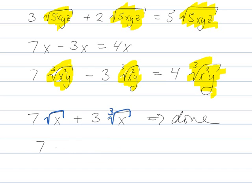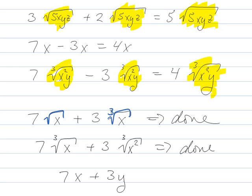Similarly, if you had cube root of x plus cube root of x squared, you're still done. If it's not exactly the same thing and you can't manipulate it to make it the same thing, you're just done. For the same reason that you can't do anything with this, the x and the y aren't the same, so you're stuck with it.